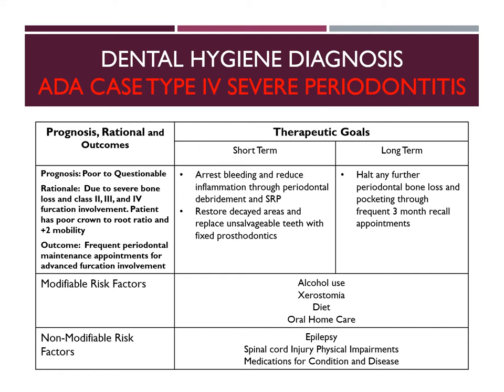Therapeutic goals. For the short-term goals, we are going to arrest bleeding and reduce inflammation through periodontal debridement and SRP. We also want to restore any decayed areas with composite or amalgam. We are also going to replace unsalvageable teeth with fixed prosthodontics, which can also be a long-term goal depending on the patient's financial stability. For the long-term goal, we are going to halt any further periodontal bone loss and pocketing through frequent 3-month recall appointments. For modifiable risk factors, we have alcohol use, xerostomia due to the medications, diet, and oral home care. For non-modifiable risk factors, we have epilepsy, the spinal cord injury, physical impairments, and the medications that we cannot change for the condition and disease.